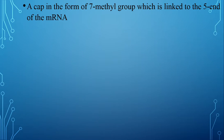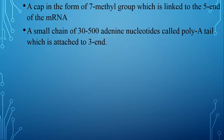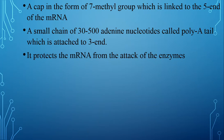For protection from enzymes, a cap in the form of a 7-methyl group is added to the 5 prime end of messenger RNA. A small chain of 30 to 500 adenine nucleotides called a poly-A tail is added to the 3 prime end of messenger RNA. The cap consists of the 7-methyl group and the tail consists of adenine nucleotides, so it is called the poly-A tail. The purpose of this cap and tail is to protect messenger RNA from the attack of enzymes.